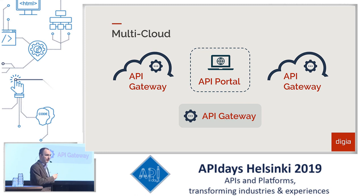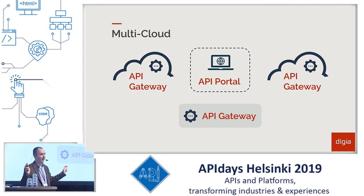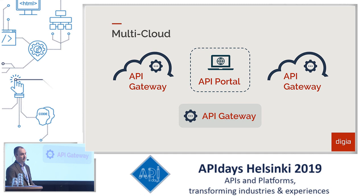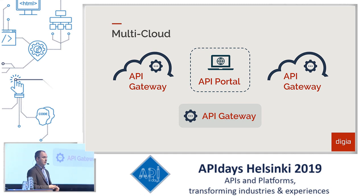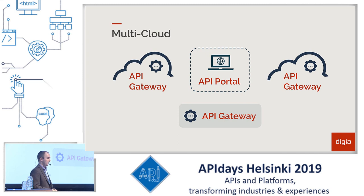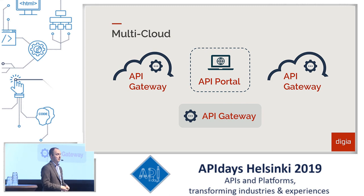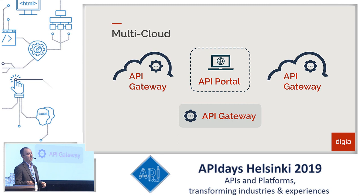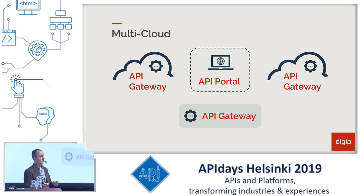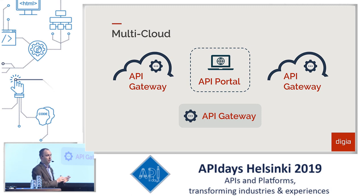Of course you can take from each cloud the native API management capabilities — each cloud has their own kind of API management solution, and some people do that. But there you end up with the problem of governance and discoverability. You will have separate developer portals and separate technologies to implement the policies that API management provides, like security. With APIs and API management, we talk about a lot more than the technology — it's how the API development teams utilize it and how the knowledge tied to the product is used in the enterprise. It will be a lot more difficult to enforce best practices when you have several different platforms.